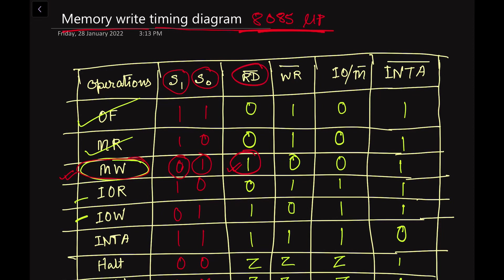The RD bar signal is 1 because this is not a read operation — we are concerned with the write operation. Therefore the WR bar signal, being an active low signal, will be zero here. It is a memory-related operation, so the IO/M bar (active low) signal is zero to enable the memory unit. The INTA bar signal is always 1 except during INTA operations.